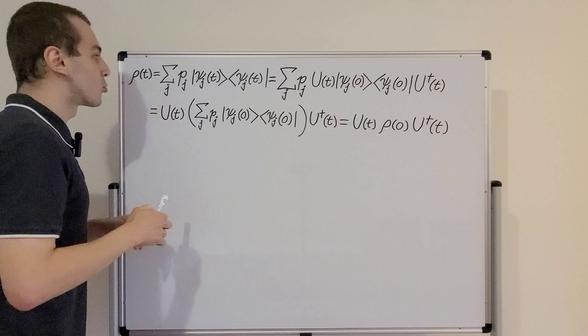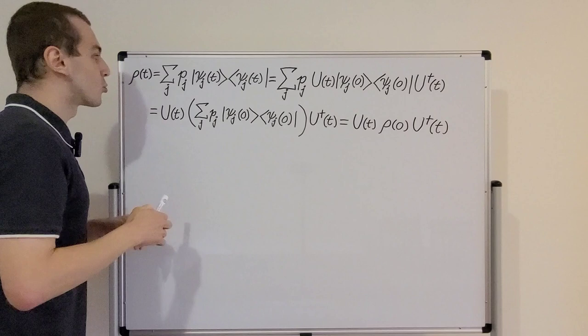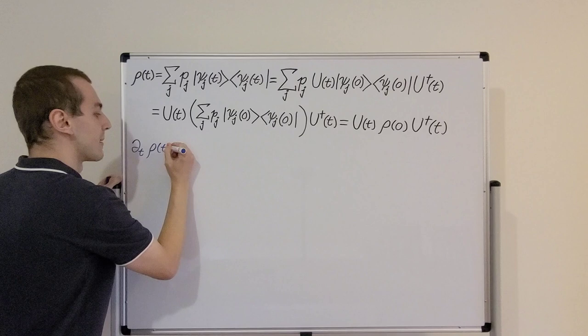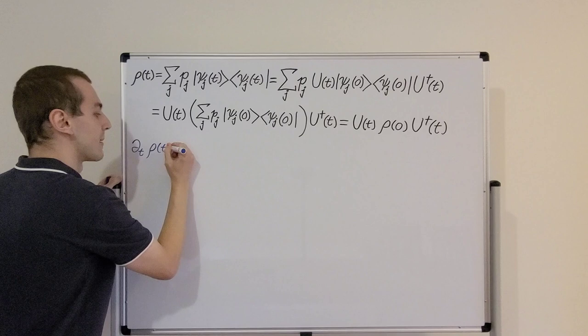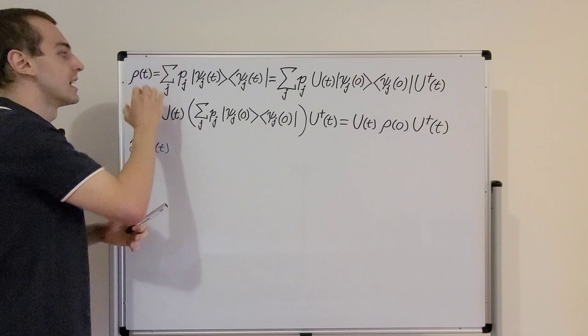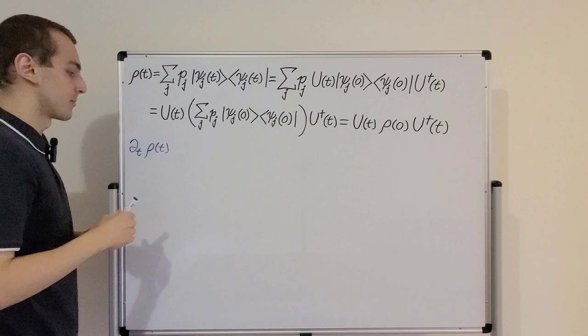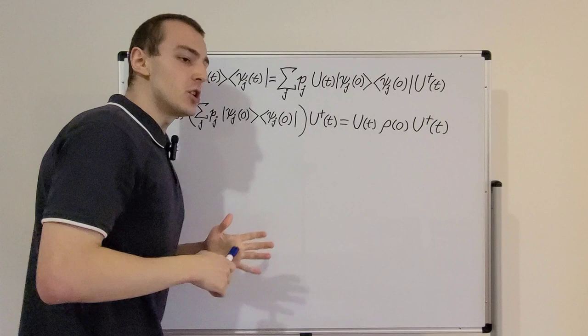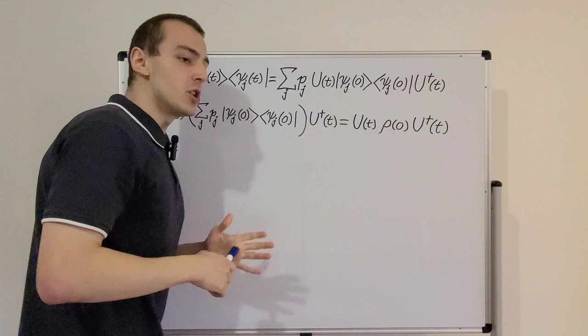Now that we understand the definition of the density matrix, we can derive the von Neumann equation. The von Neumann equation is concerned with the time derivative of rho. We use the condensed notation where partial t is the same as d/dt — the time derivative of rho as a function of time. Finding what this equals gives us an equation describing the time evolution of the density matrix. We apply this time derivative to the ket-bra combination using the product rule.